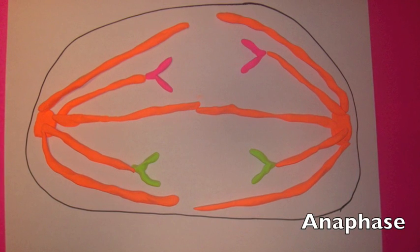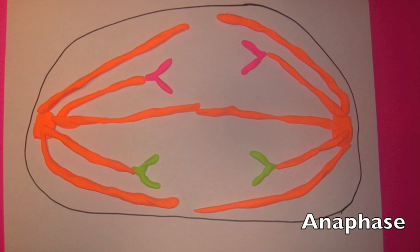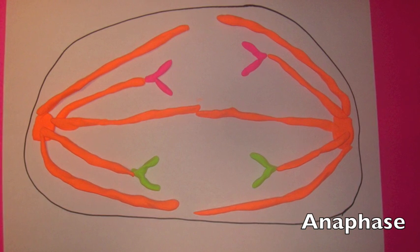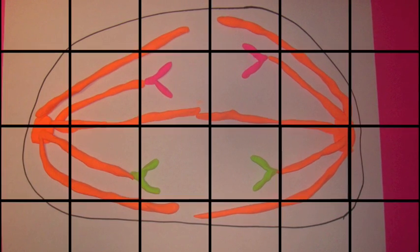During anaphase, the two chromatids of each chromosome separate and move to opposite poles, as if they were being magically pulled along the spindle fibers by the centromeres.